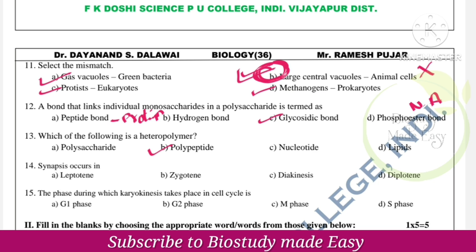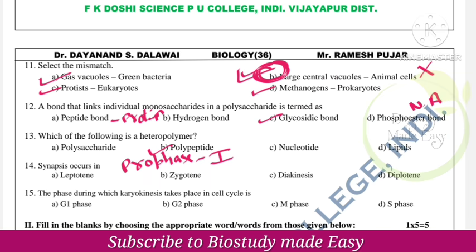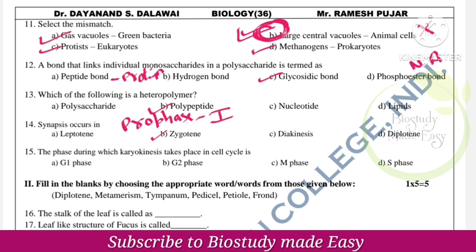Synapsis occurs during prophase 1. Note all stages — very very important: synapsis is in the zygotene stage. The phase during which karyokinesis takes place in the cell: the right option is option C, M phase. M phase is the mitotic phase where the actual division starts.